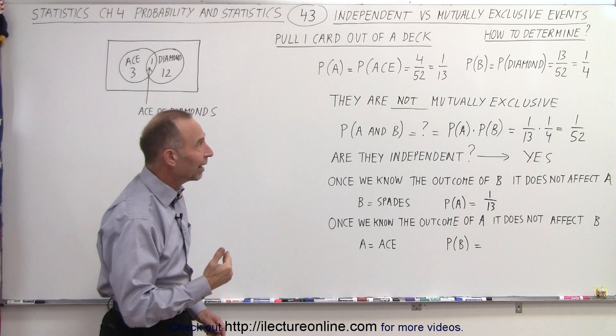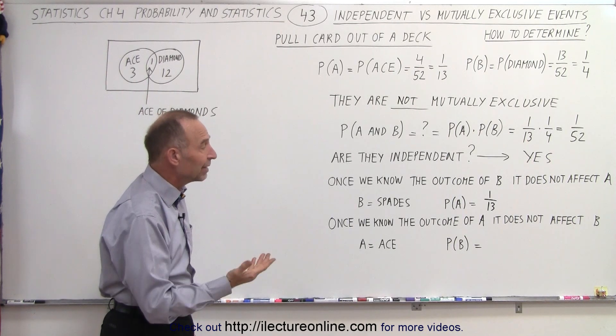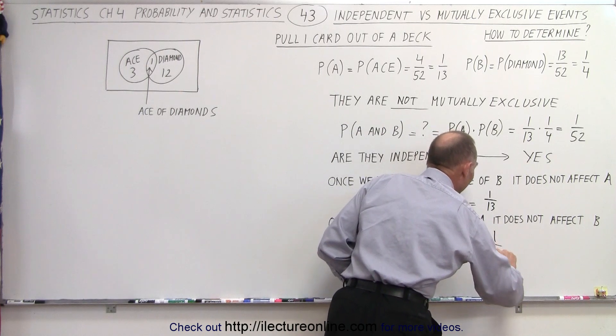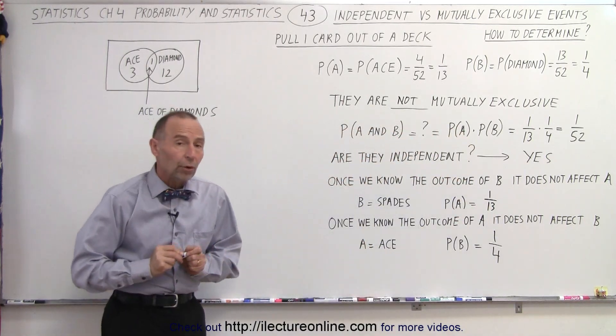So it can be any one of the four different kinds. And so it could still be a diamond. It could still be something else. And therefore, the probability of B has not changed. It is still one quarter.